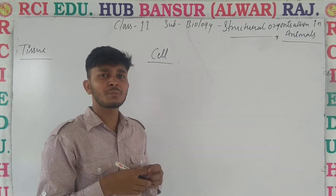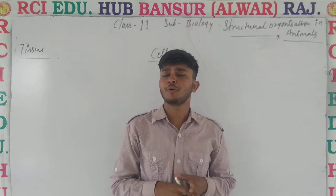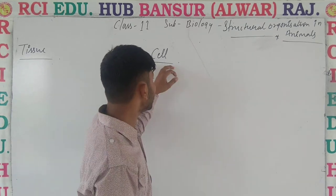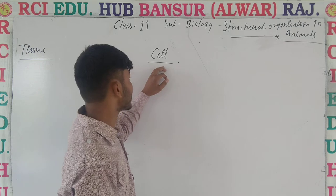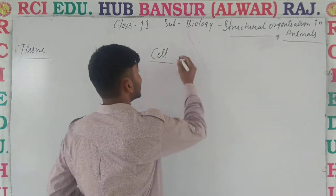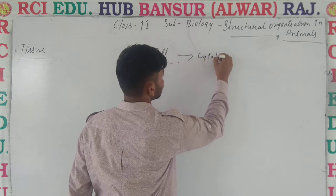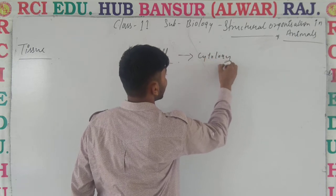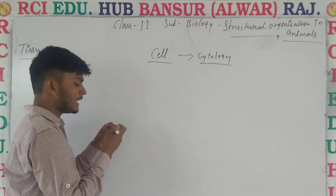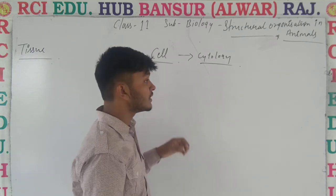We can see that in our body, infinite cells are formed — millions or trillions of cells are formed in our body. The cell is the structural and functional unit of life. Study of cells is known as cytology. We will talk about cells in detail in the next chapter.